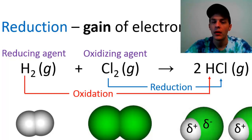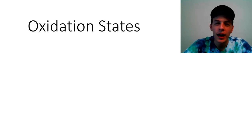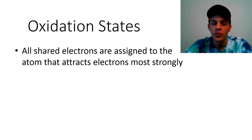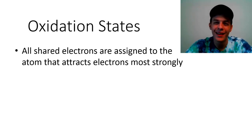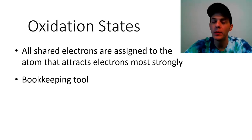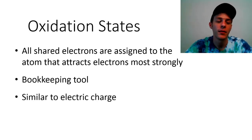In the rest of the video we're going to talk about something called oxidation states, which are basically a tool that chemists use to track the progress of redox reactions and figure out which atoms are being oxidized and which are being reduced. The way oxidation states work is they are assigned to atoms such that any electrons shared between atoms are assigned to the atom that attracts electrons most strongly. Oxidation states aren't necessarily real — they're more of a fictitious bookkeeping tool — but they are highly useful for tracking redox reactions.